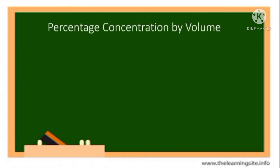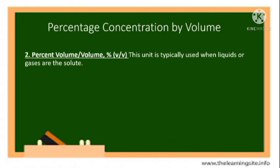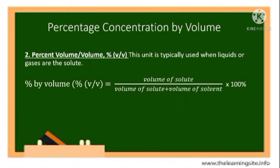Now let's do mathematical calculations on percentage concentration by volume. In percentage concentration by volume, this unit is typically used when liquids or gases are the solute. This equation shows that the fraction can be converted to a percent by dividing the volume of solute by the sum of the volumes of solute and solvent — which is the volume of solution — multiplying by 100 and adding a percent sign.